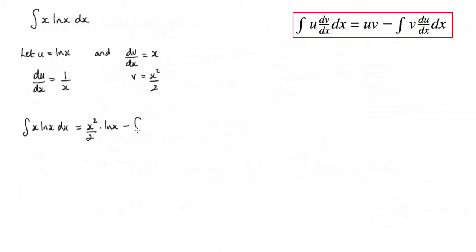Then we minus the integral of v, and v is x squared over 2. So it's v du dx, that's times 1 over x with respect to x.